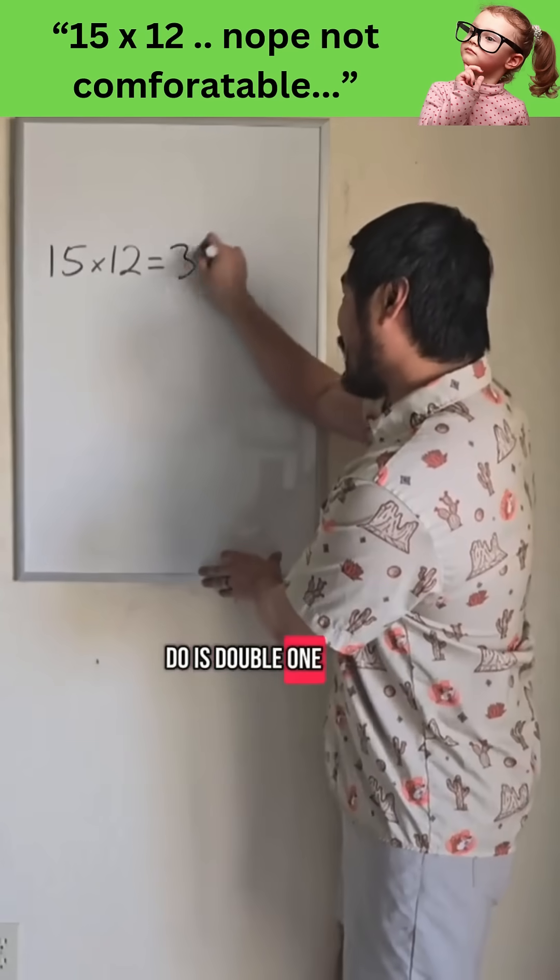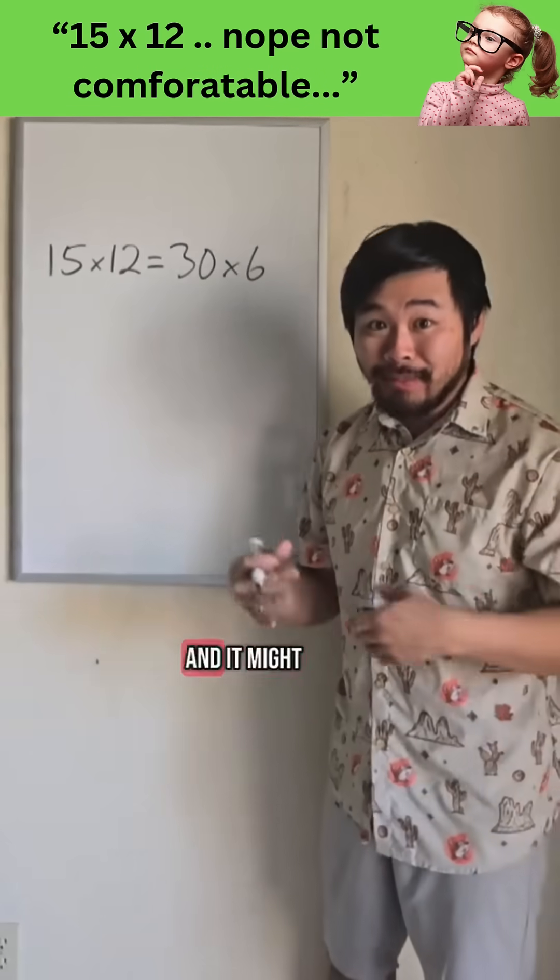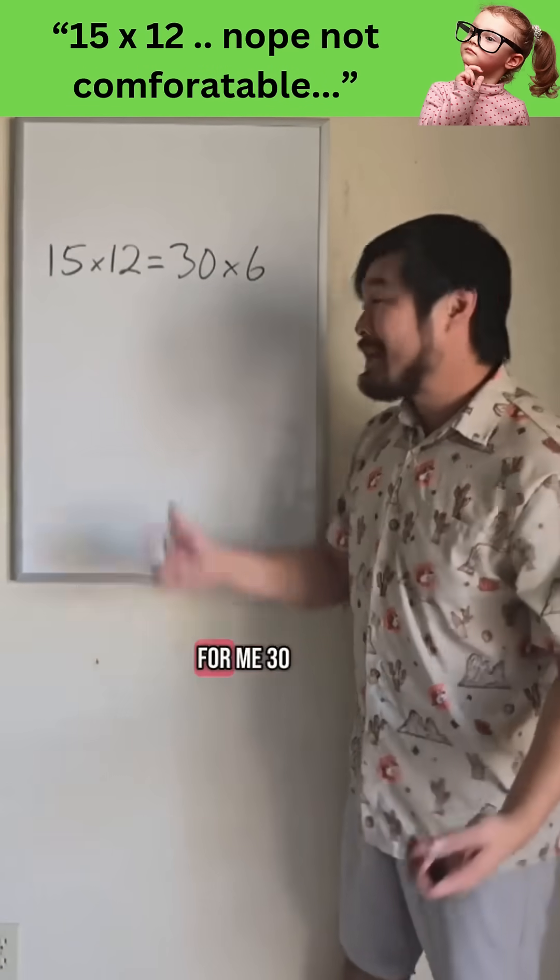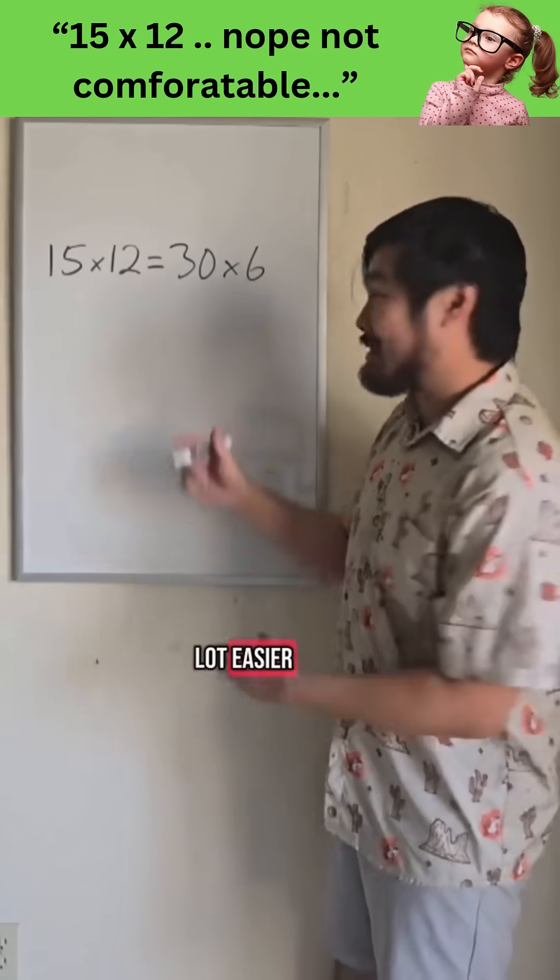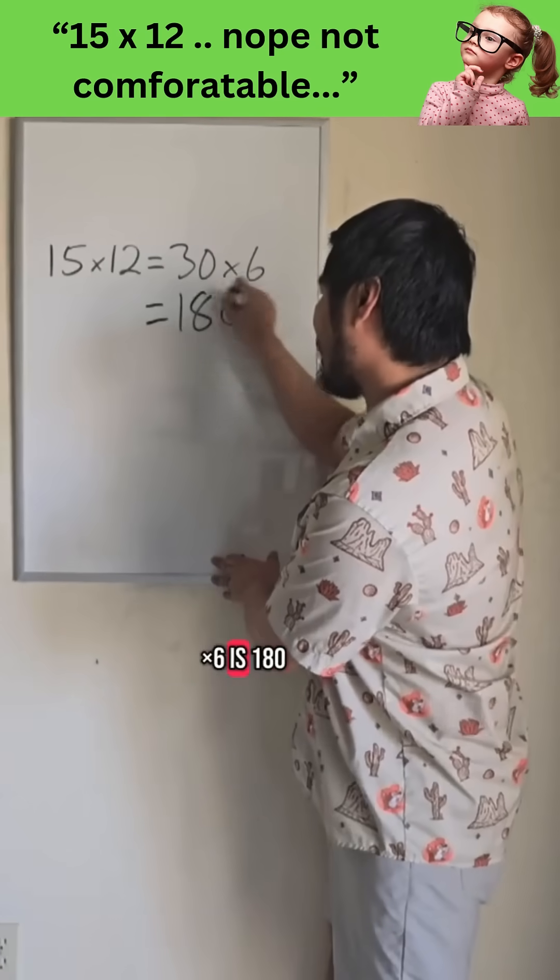What you can do is double one number and half the other, and it might be easier for you. For me, 30 times 6 is a lot easier. I know 30 times 6 is 180.